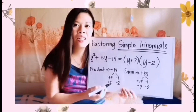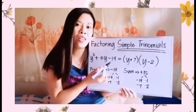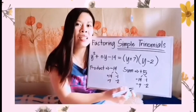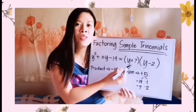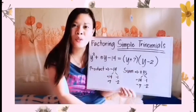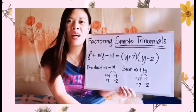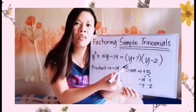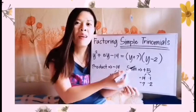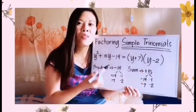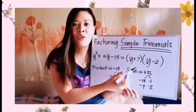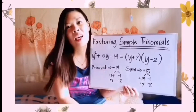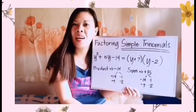We put positive 7 and negative 2, giving us the factors: quantity of y plus 7 times quantity of y minus 2. To check: y times y gives y squared; positive 7 plus negative 2 gives positive 5, attached to y; and positive 7 times negative 2 gives negative 14. Therefore, our factors are perfect.